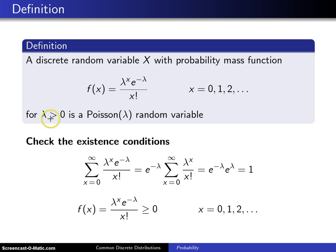For some positive parameter lambda, which is often known as a rate parameter, that is a Poisson random variable with parameter lambda.